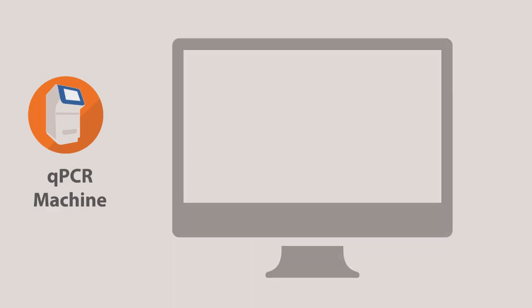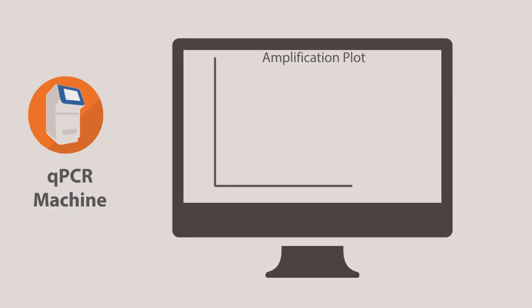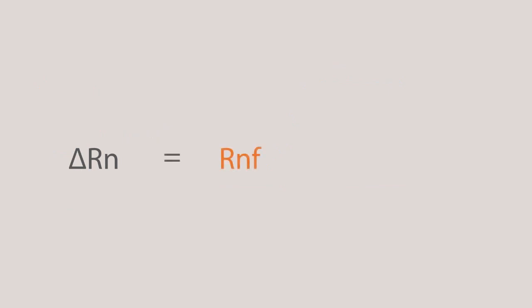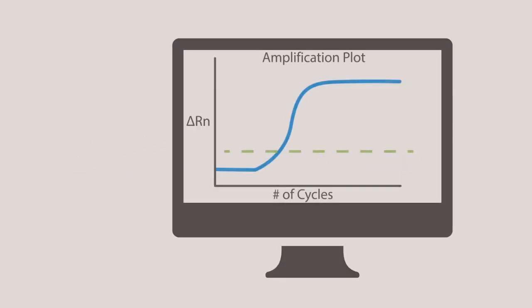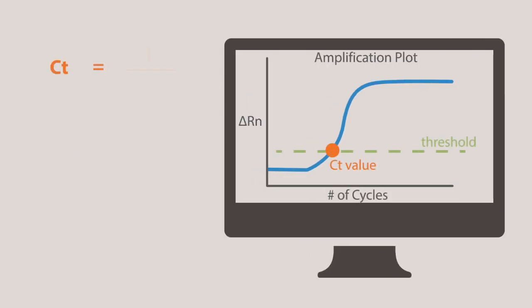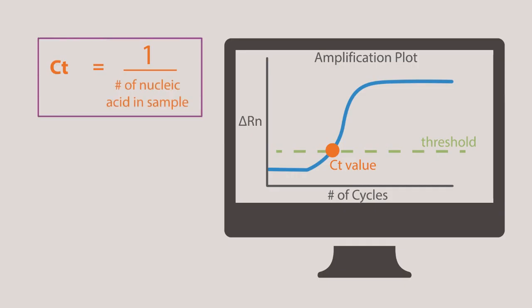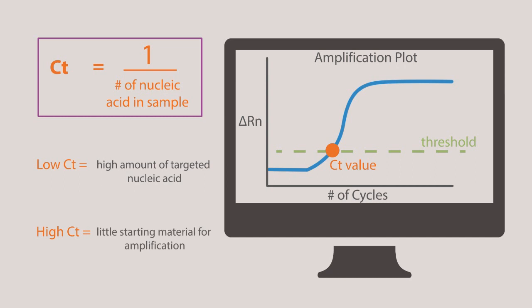As data is collected, the software shows an amplification plot, which is a log graph with delta Rn plotted against the cycle number. Delta Rn, or the fluorescent signal, is calculated using the equation Rnf minus Rnb, where Rnf is the fluorescent emission at any given point and Rnb is the baseline fluorescent emission. The CT value is the number at which delta Rn of a given sample crosses the threshold value. The CT values are inversely correlated to the amount of nucleic acid in your sample. A lower CT value indicates higher amounts of the targeted nucleic acid, while higher CT values mean that you have very little starting material for amplification.